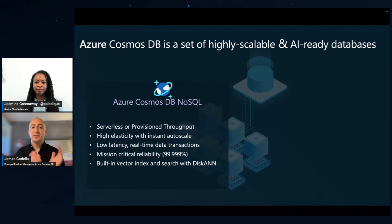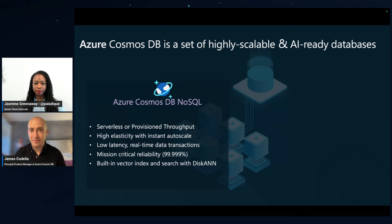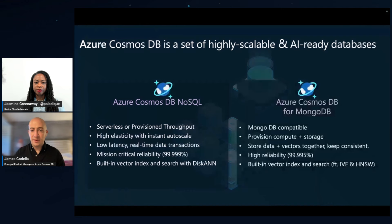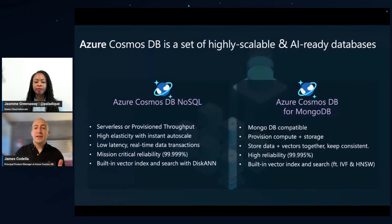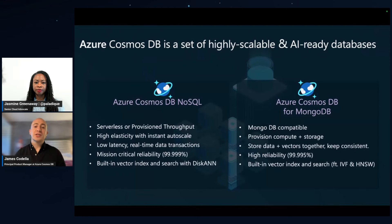It also features built-in vector indexing and search using a new suite of state-of-the-art algorithms from Microsoft Research called DiskANN, which we'll talk about more in a little bit. We also have our Azure Cosmos DB for MongoDB offering — a MongoDB-compatible API that offers provision compute and storage in a v-core or dedicated compute structure. You're able to store your data and your vectors together in any Cosmos DB instance to keep your data consistent. Azure Cosmos DB for MongoDB also has high reliability and built-in vector indexing and search featuring the IVF and HNSW algorithms.